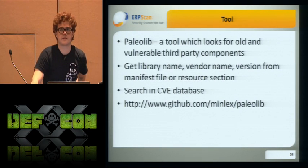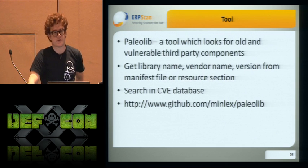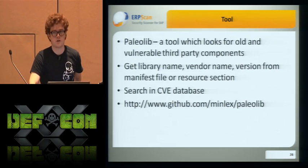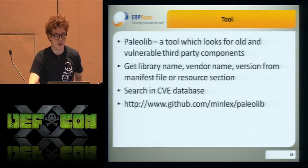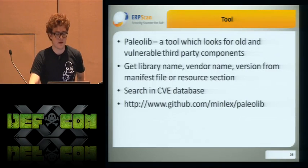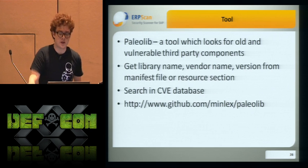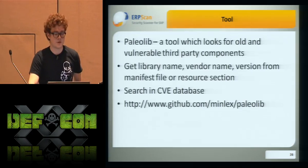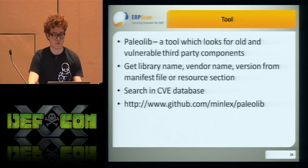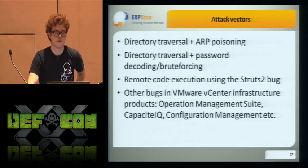During penetration testing, we often have big systems and big applications that have a lot of libraries and dependencies. I think it would be useful to have a tool to quickly find vulnerable libraries. So I wrote this tool — it gets the library name, gets its version, and searches the CVE database. Right now it uses the standard CVE database, but in the future I'd like to make my own database of vulnerable libraries.